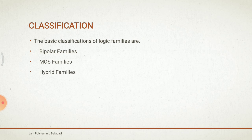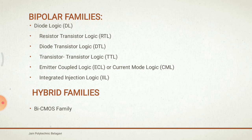There are different classifications of logic families. First is the bipolar family, second is the metal oxide semiconductor family, and third is the hybrid family. In the bipolar family, there is diode logic, resistor-transistor logic (RTL), diode-transistor logic (DTL), transistor-transistor logic (TTL), emitter-coupled logic (ECL) or current mode logic, and integrated injection logic (IIL).